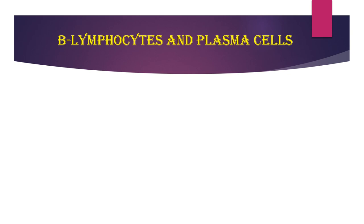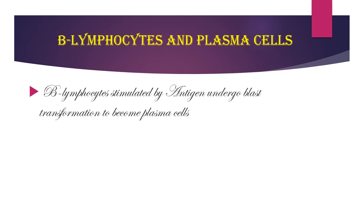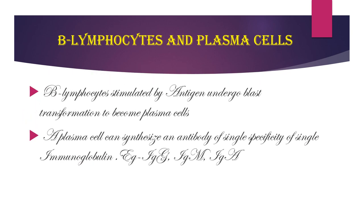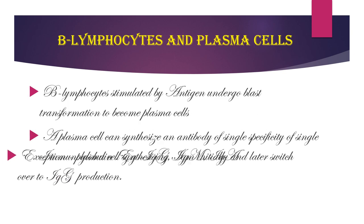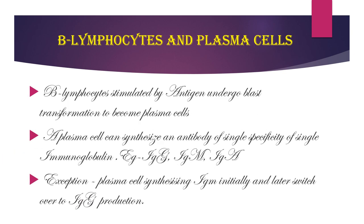B lymphocytes, when stimulated by antigen, undergo blast transformation to become plasma cells. A plasma cell can synthesize an antibody of a single specificity — for example IgG, IgM, or IgA. The exception is that a plasma cell initially synthesizing IgM may later switch over to IgG production.